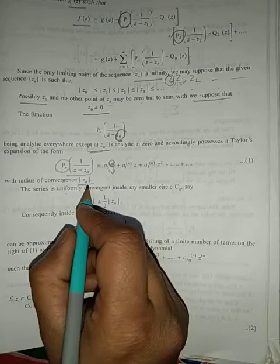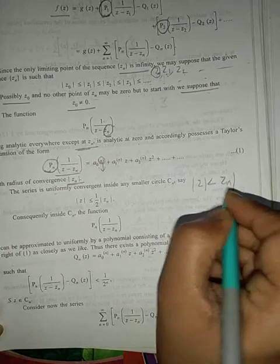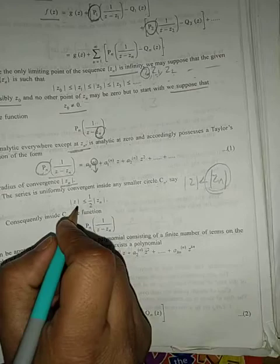Now the series is uniformly convergent in the radius zₙ so series is uniformly convergent for |z| less than zₙ. Let us suppose we have taken the radius half that the series uniformly convergent inside the circle such that |z| ≤ (1/2)|zₙ|.